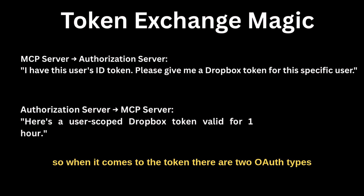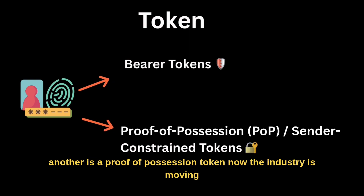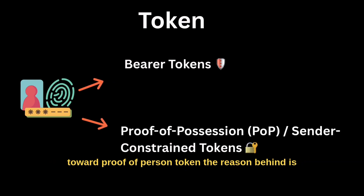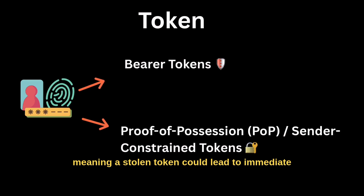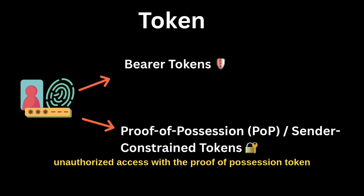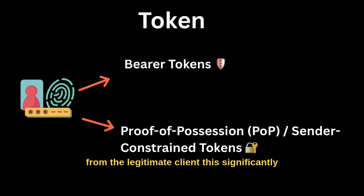When it comes to token types, there are two OAuth types. One is the bearer token and the other is the Proof of Possession token. The industry is moving toward Proof of Possession tokens. The reason is that traditional bearer tokens are like a hotel keycard — whoever has it can use it, meaning a stolen token could lead to immediate unauthorized access. With Proof of Possession tokens, security is enhanced because a stolen token is useless without cryptographic proof from the legitimate client, which significantly enhances security.